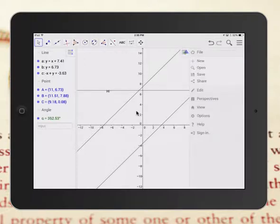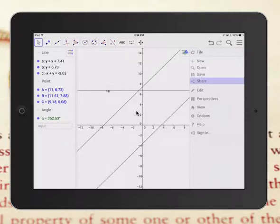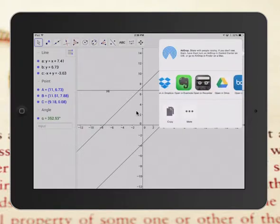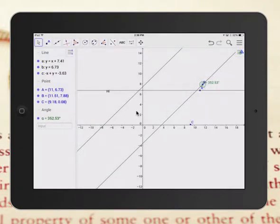After they're done doing whatever you need them to do, they click on these little three lines in the upper right-hand corner, and they can save it and they can also share it. They can share it with you, mail it to you, send it to you in a variety of different ways. You can see there's email, there's Drive, all those different ways to share their graph with you.